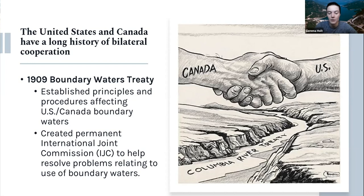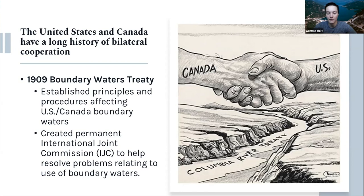They share the longest international border between two countries, and their bilateral negotiations date back for centuries. As far as water diplomacy goes, the origin is the 1909 Boundary Waters Treaty, signed to come up with an approach for preventing and resolving disputes over the use of shared waters. It established an International Joint Commission to help the two countries carry out its provisions. At the time, disputes over water, most notably on the Niagara River and the East Coast, were already creating tension along the border.